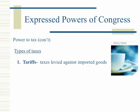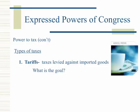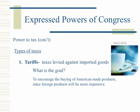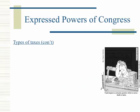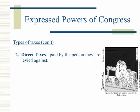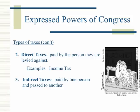Types of taxes. We have tariffs — taxes levied against imported goods — with the goal of encouraging the buying of American-made products since foreign products will be more expensive. Direct taxes are paid by the person they are levied against; an example is the income tax. Indirect taxes are paid by one person and passed to another; an example is the sales tax.